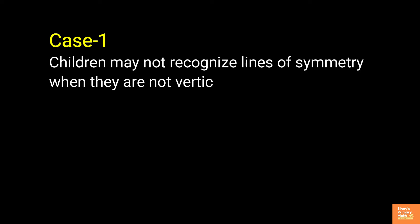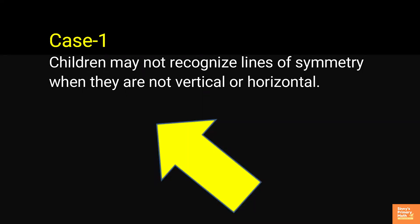Case 1: Children may not recognize lines of symmetry when they are not vertical or horizontal. For example, the figure shown has a line of symmetry but the fact that it is not vertically or horizontally oriented, children may not recognize it.